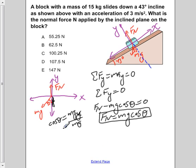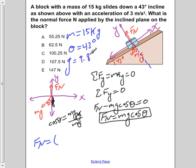So, we know that the normal force is equal to our mass. Our mass is given to be 15 kilograms. The angle of the incline is 43 degrees. And we know that the acceleration of gravity, g, is equal to 9.8 meters per second squared.